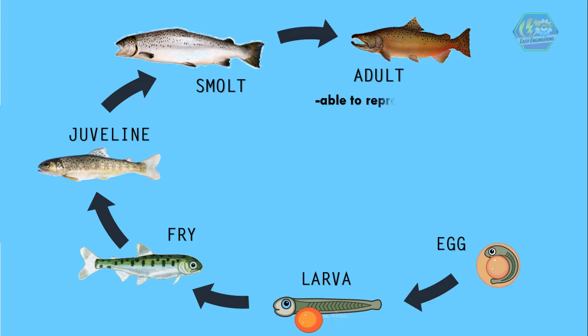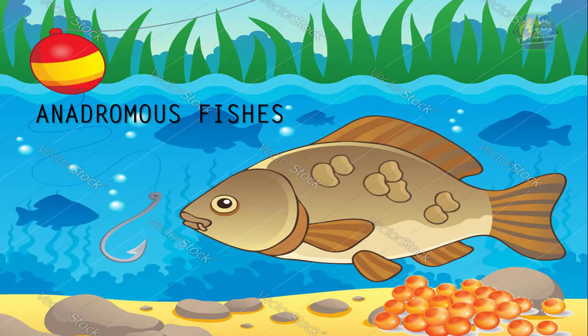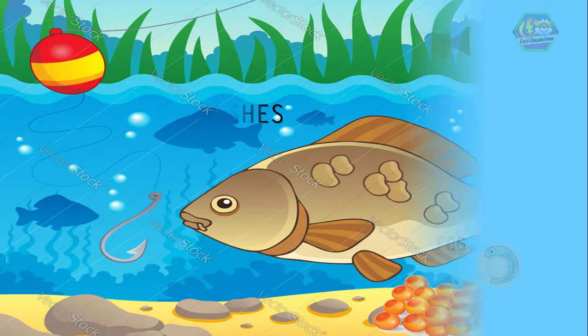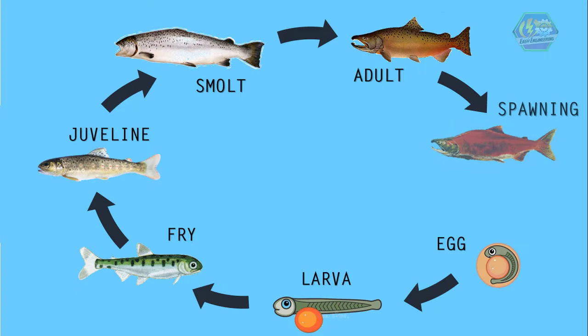Next is the adult stage. Like other animals, being an adult means they are able to reproduce. Some fishes complete the migration from fresh water to salt water in the adult stage. They are called anadromous fishes and they lay eggs in fresh waters. The opposite are the catadromous fishes.